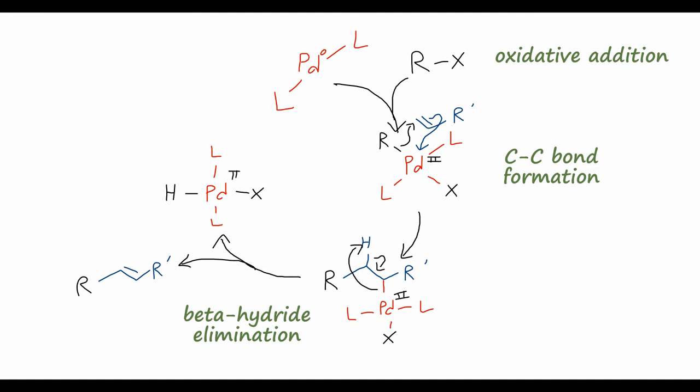And here is where the role of the base comes in, and it's going to undergo a reductive elimination on this palladium intermediate, taking off that hydrogen, and the electrons in this bond will come to the palladium, kicking off the halide, and that's going to give us our conjugate base. So we have now this BH salt, and this is going to be what regenerates the palladium catalyst for the next catalytic cycle.